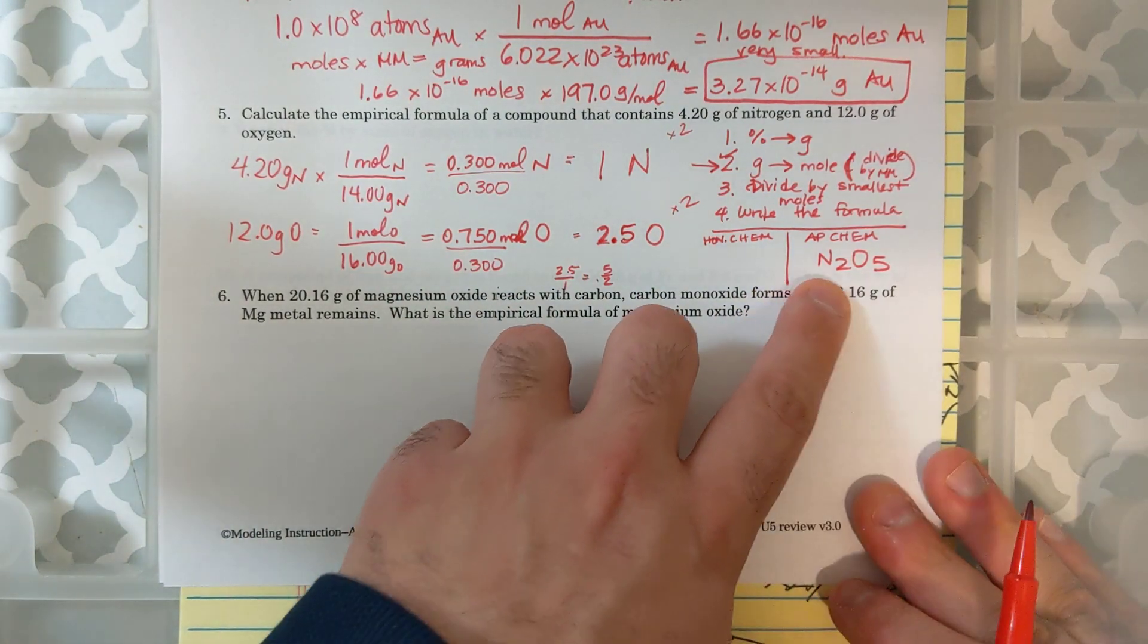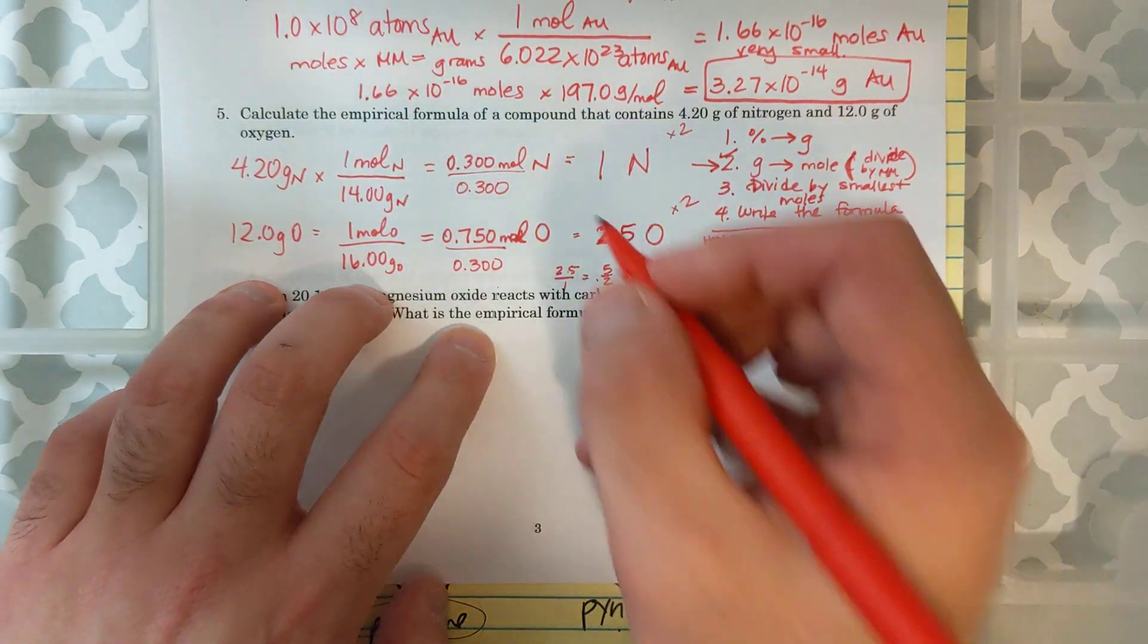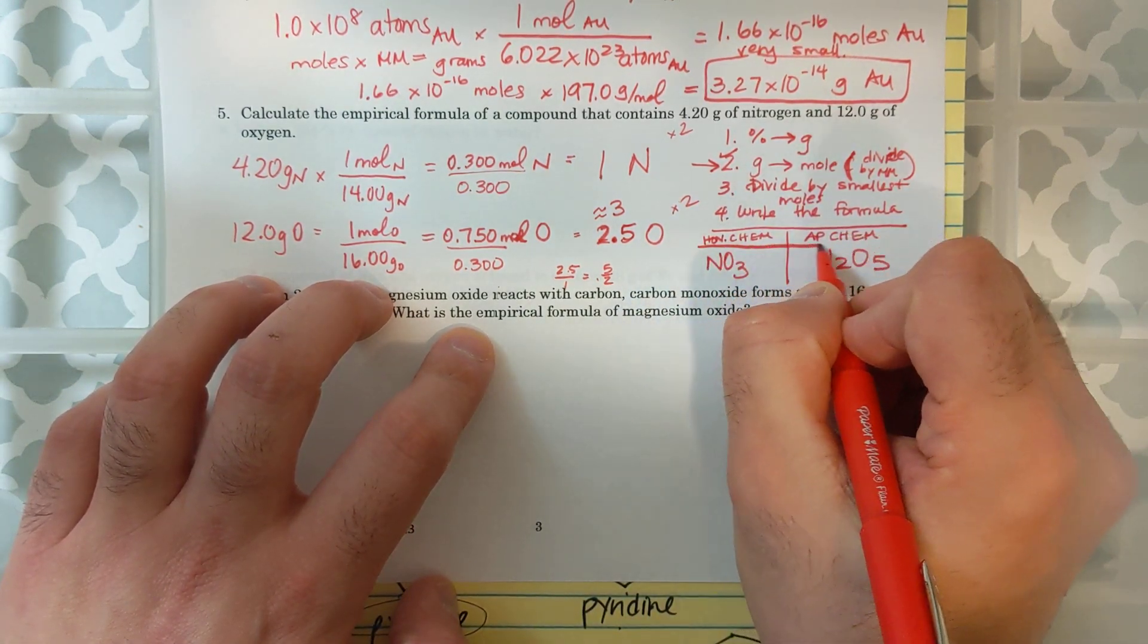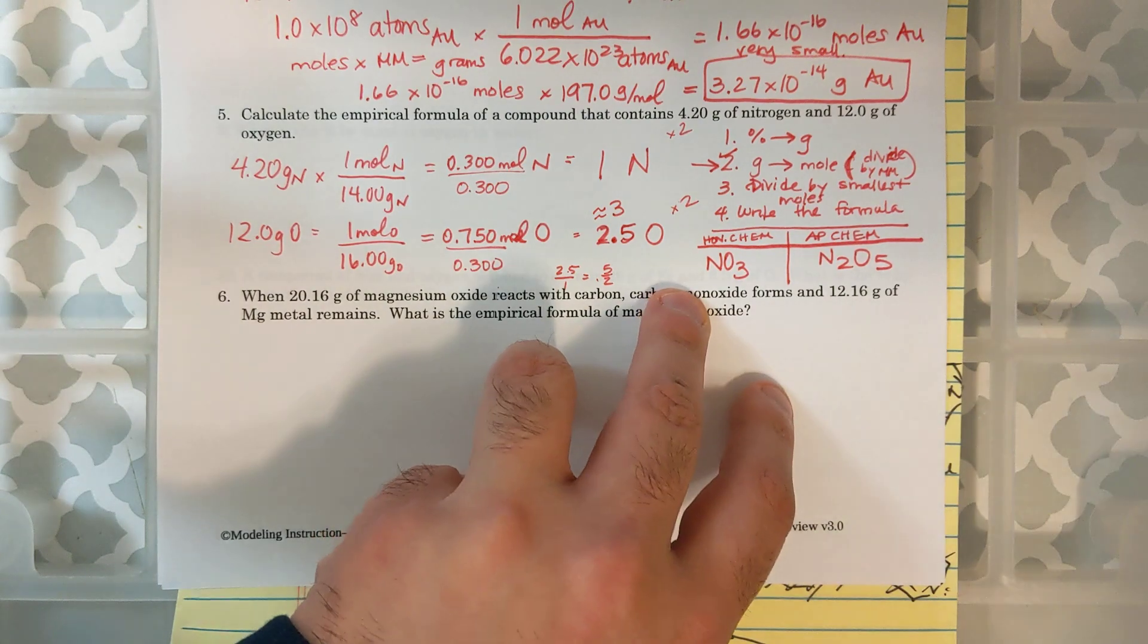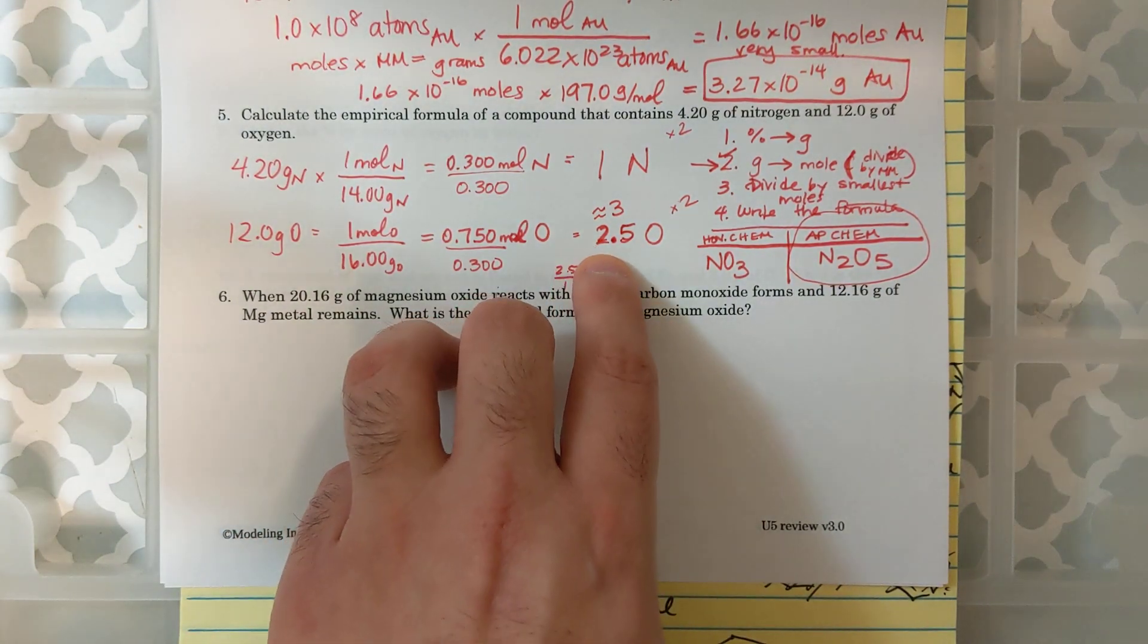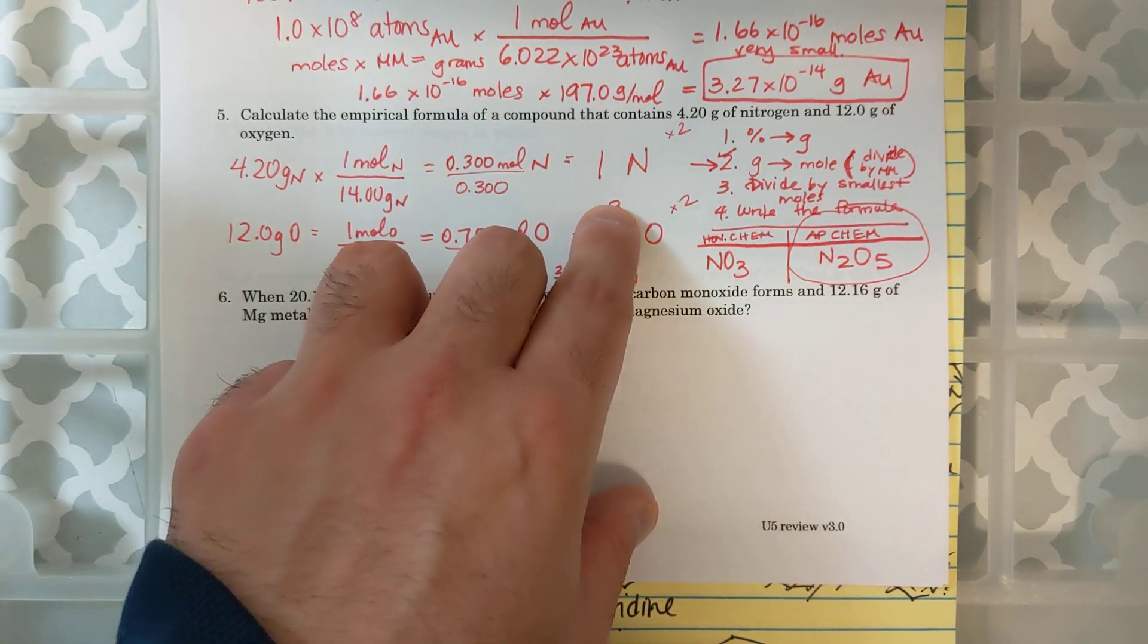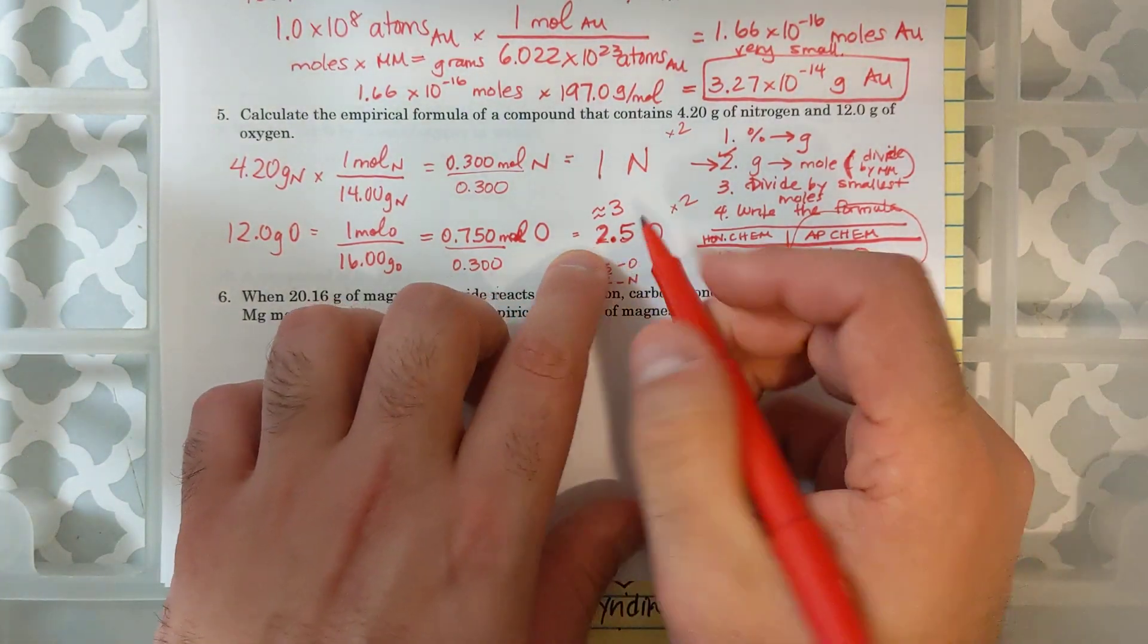That would be the AP chem answer. And that's what we would be doing if we're taking AP chemistry or doing this intently. But if you want for simplification for showing work, you could round 2.5 to about 3. And I will accept an answer of NO3 if you show your work. Both of these are going to be acceptable answers for my unit test. For other tests or for future reference, the more acceptable answer would be N2O5 because of this 0.5 rule. And that's because 2.5 over 1 is the same as 5 over 2. So that's 5-O for every 2N.